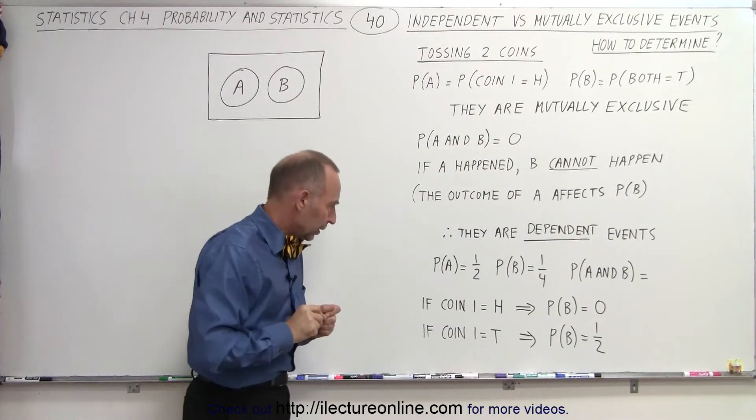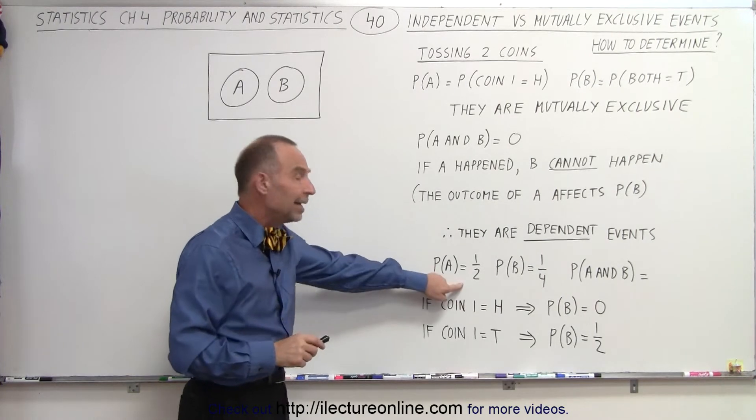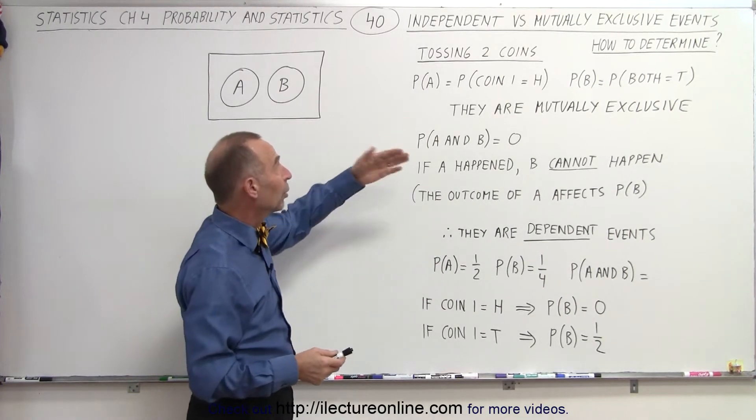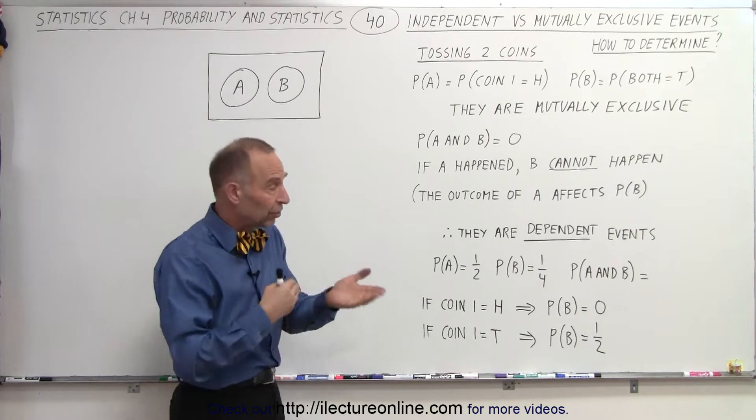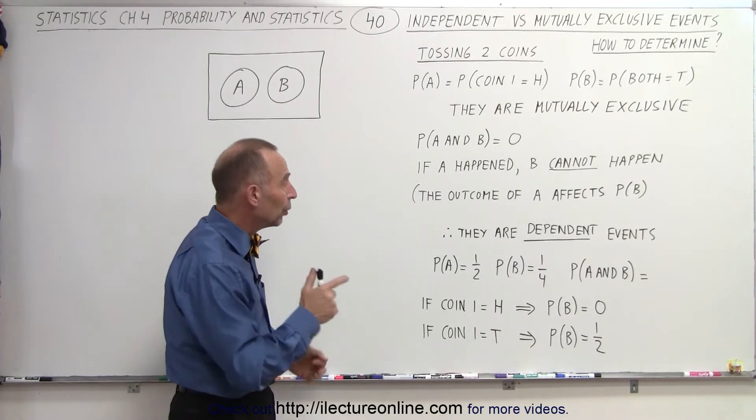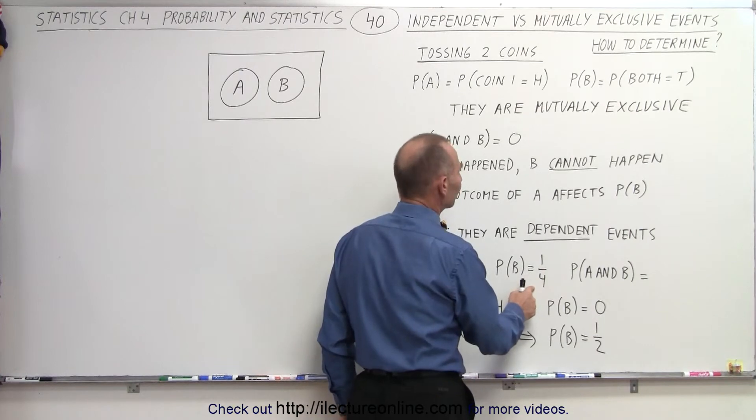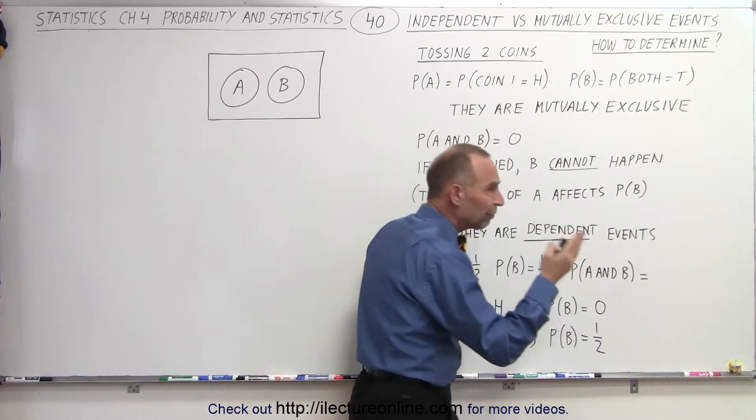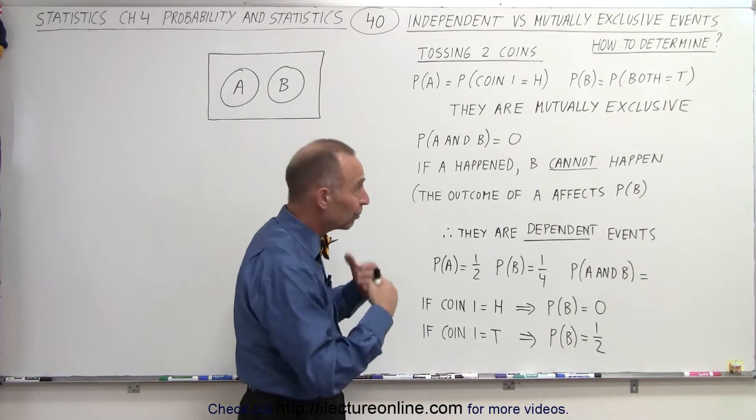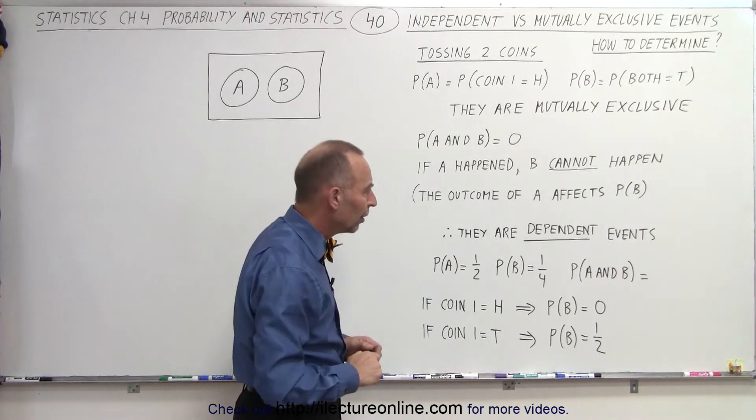Let's take a look. The probability of A is one-half. Obviously, coin one can either be heads or tails. There's an equal probability. We know that probability of B is equal to one-quarter.